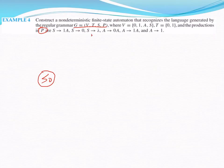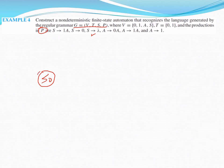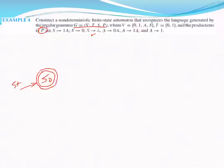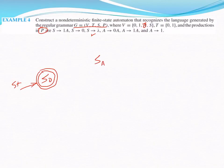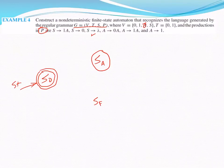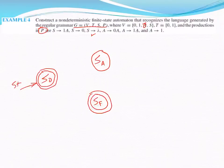Since I have S producing lambda, that state will be a final state. Now I need to create two more states. I need to create a state for A, so SA, which will be a non-final state. Then I need to create another state, SF, for my final state. And now I'll just walk through my productions.